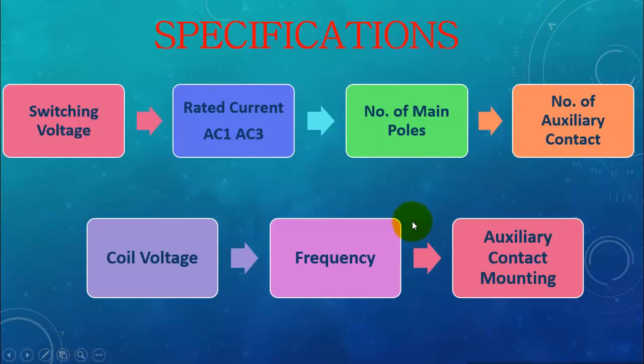So quickly, let's talk about the main specifications of the contactor. Whenever you need to order the contactor, you need to specify these parameters. First is the switching voltage, AC or DC. Next is the rated current. You need to keep an eye on the application of the contactor, whether it is used for non-inductive load or inductive loads. Then you need to specify the number of main poles. There can be three main poles or four main poles of a contactor.